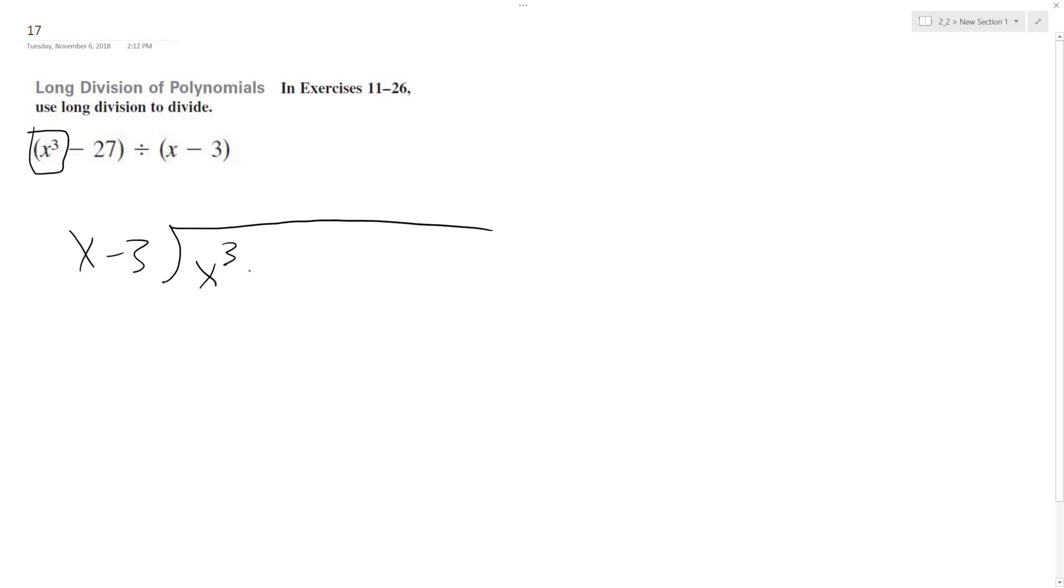x cubed and then plus 0x squared plus 0x minus 27. That seems a bit odd, but what all these do, these are space holders, because we're going to have to take those into account.